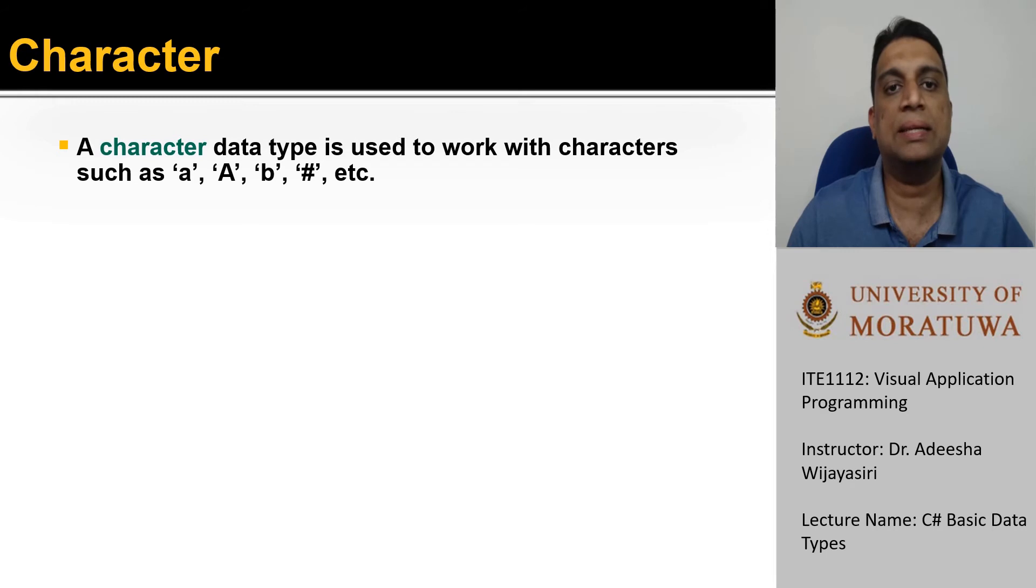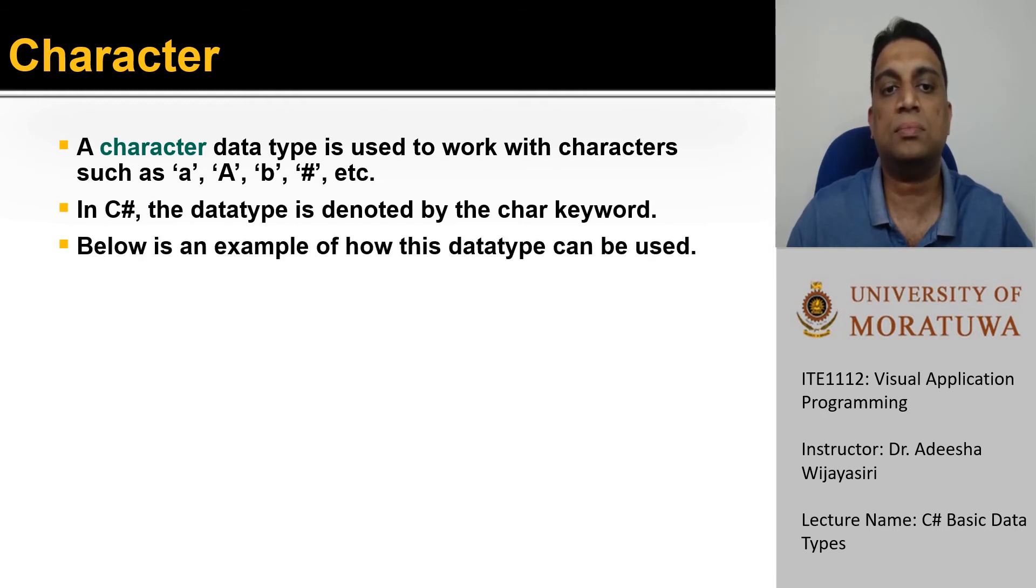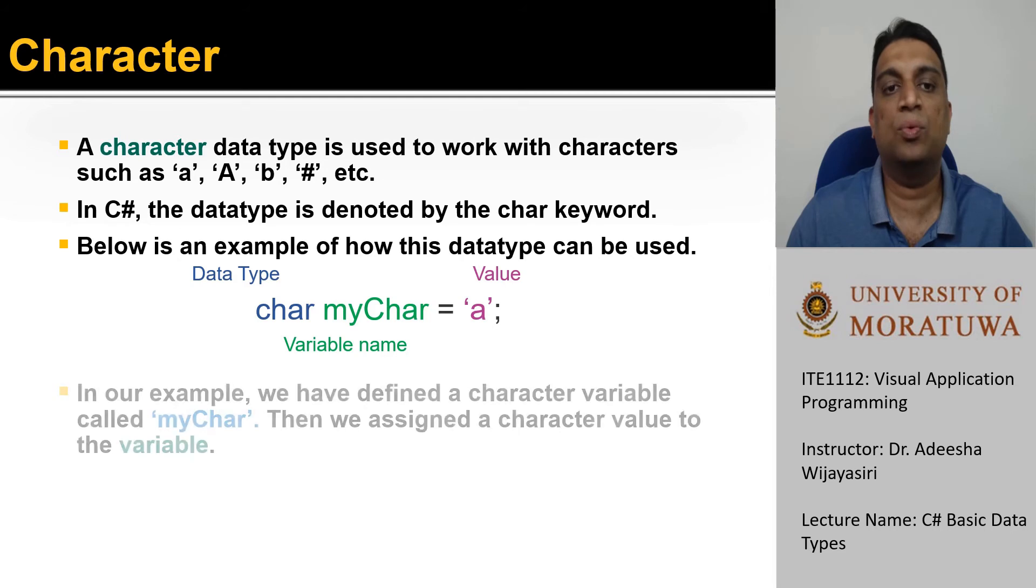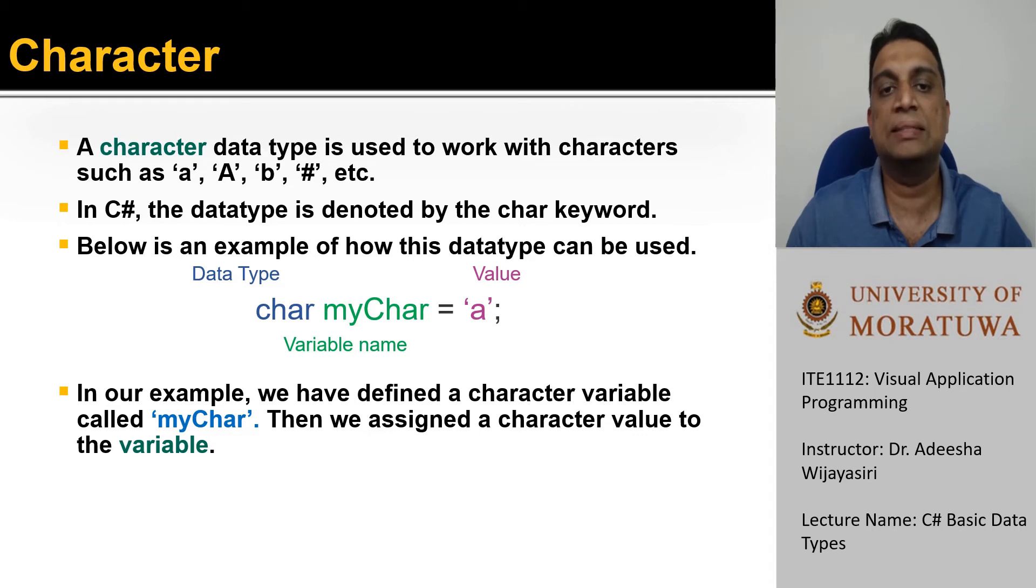Character data type is another popular data type in programming languages which can be used to work with characters. In C sharp, this data type is denoted by the keyword char. As you can see in this statement, variables of char type can be assigned a character value. Here we have defined a character variable called my char and assigned a as its value.